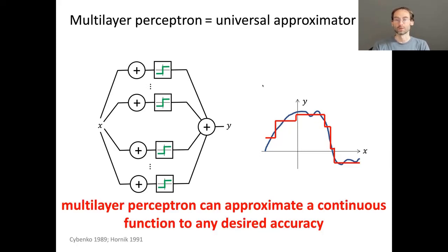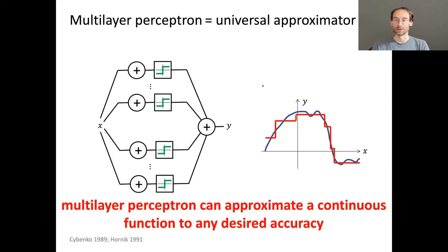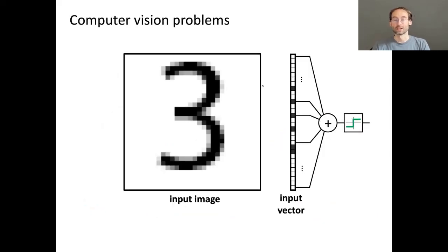The moment you can represent step functions, you can approximate any continuous function to any desired accuracy — the universal approximation property, proven in the late 80s. In a sense that's very good news: we can represent anything we want. The problem is that this is a very weak inductive bias. When we apply these simple networks to real-world high-dimensional data such as images, they tend to fail miserably, which was one reason for the so-called AI winter around the 70s.